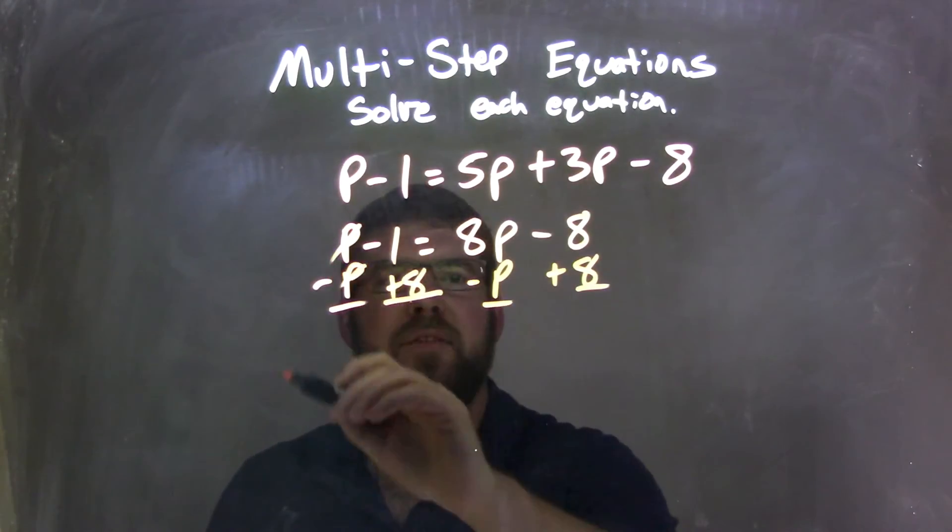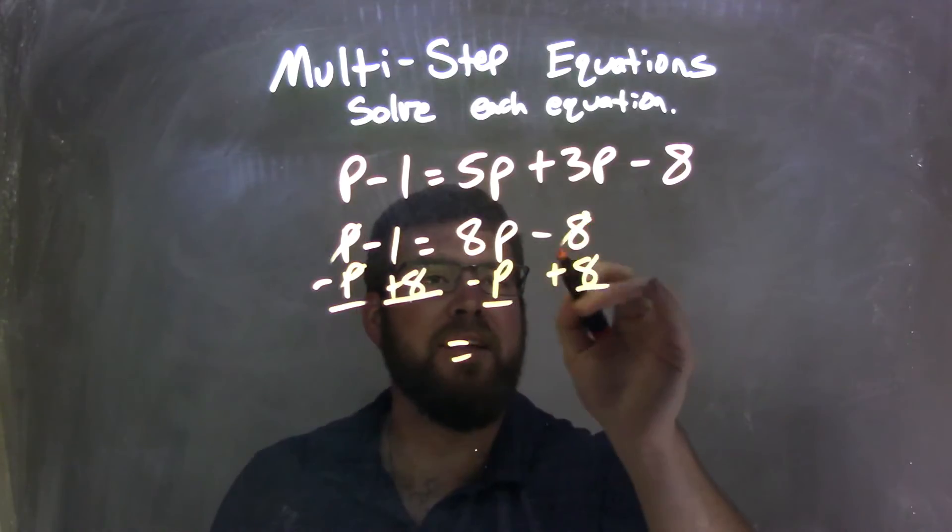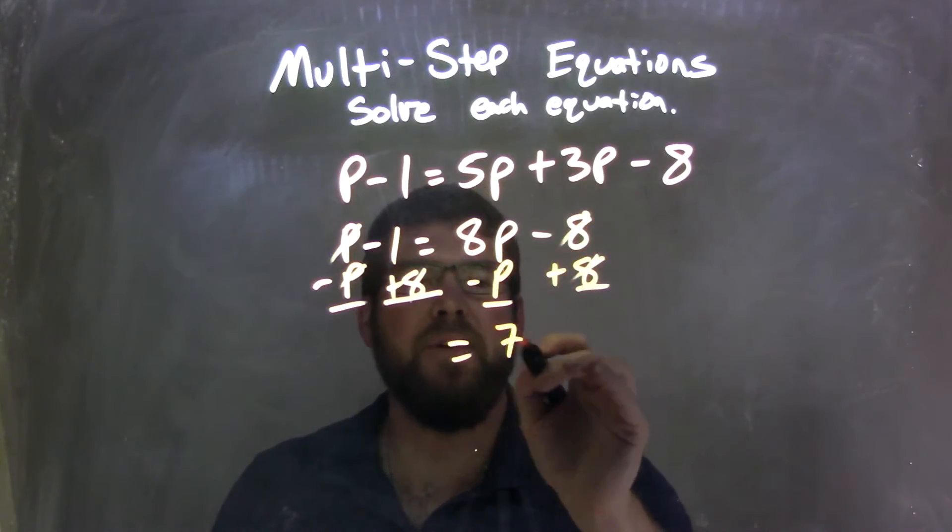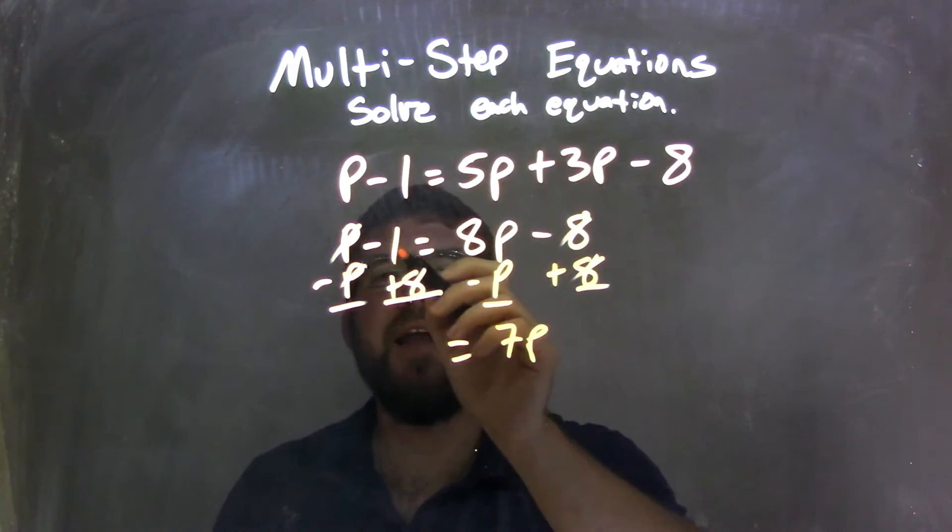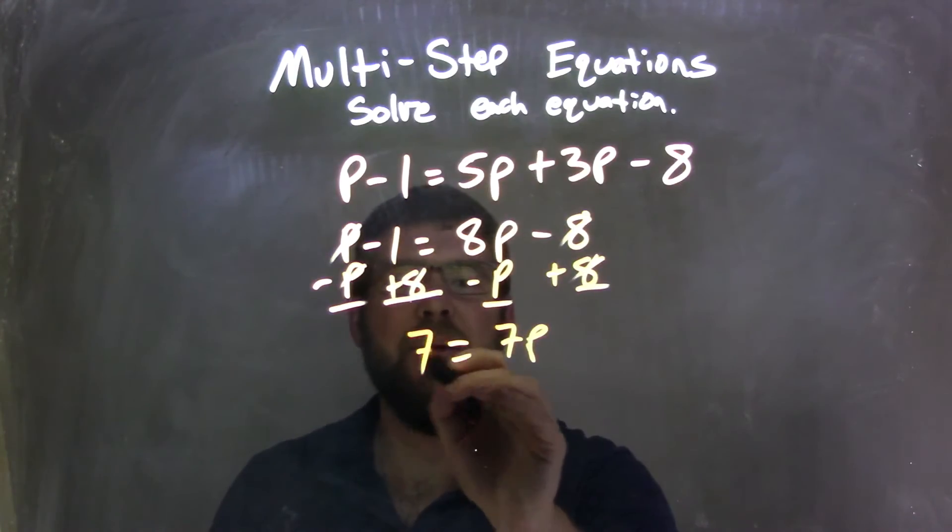That cancels out these p's here, and the 8's over here. 8p minus 1p is 7p, remember that's a 1p. And negative 1 plus 8 is 7, a positive 7.